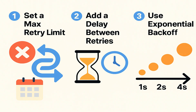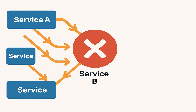Timeouts and retries should always be handled by the service that is making the call. Now imagine service B is down but everyone is still trying to call it non-stop — this situation is like a traffic jam. All the requests get stuck waiting for service B, which not only makes service B even more overloaded but also slows down or crashes the other calling services.